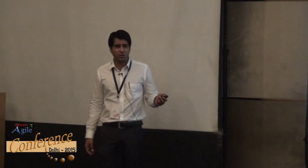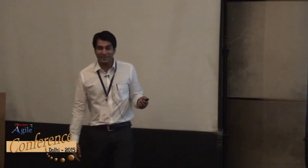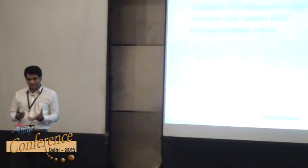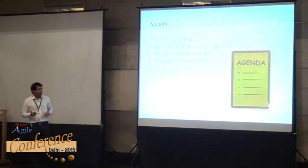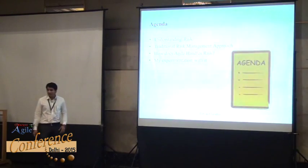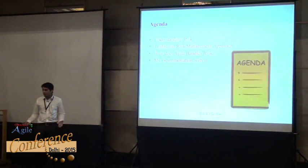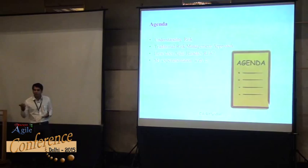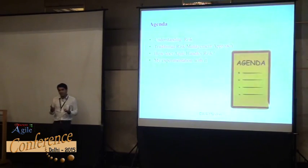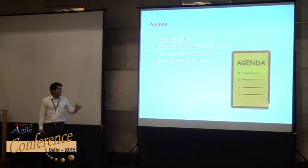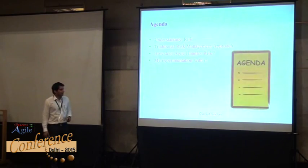I work for a company called SDG. Moving on to the agenda — like anything else in Agile, I've kept it very simple with only four agenda items. This presentation will be quite short, around 25 minutes, followed by Q&A. The first part is understanding risk — what do we mean by risk? Then we look at the traditional risk management approach, how Agile handles risk, and finally my experimentation: what I did in my projects and what worked out well.